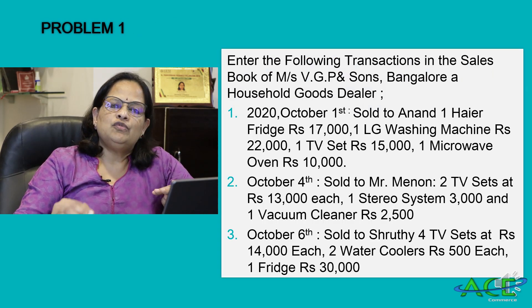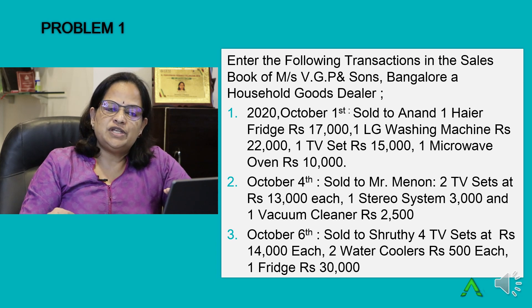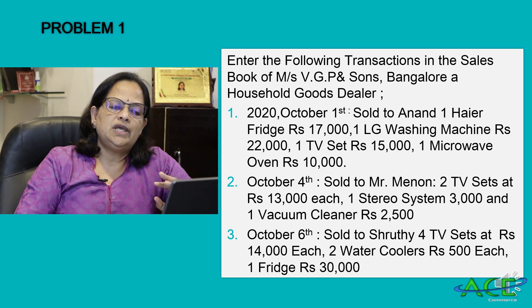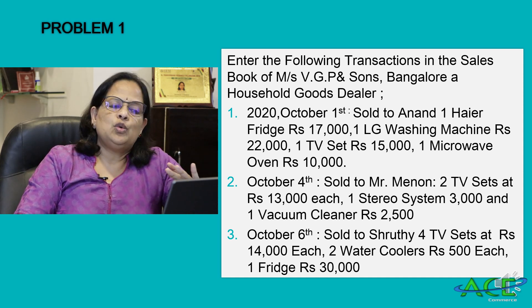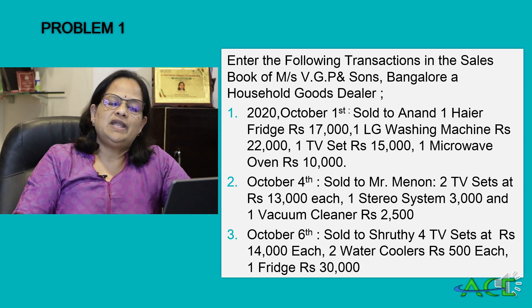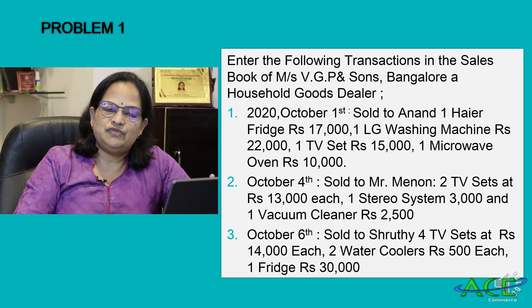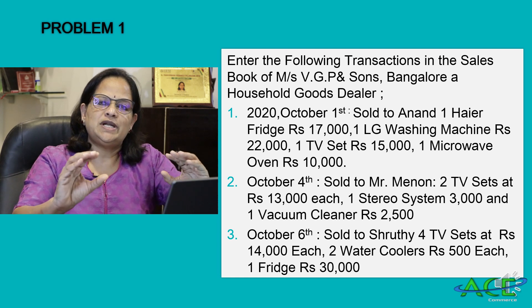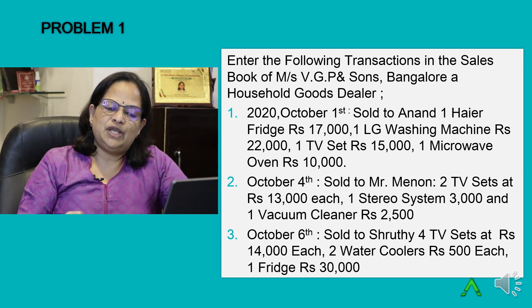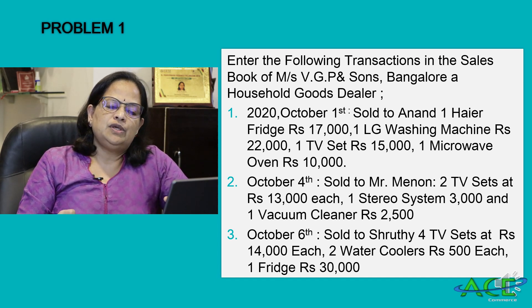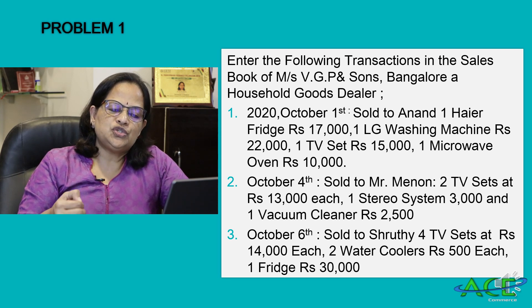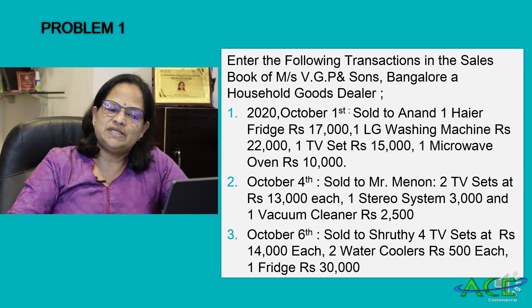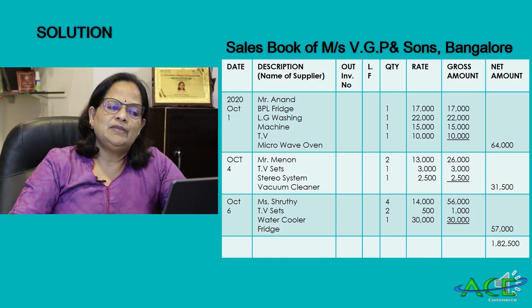Now we will do a problem. Enter the following transactions in the sales book of Messrs VGP and Sons, Bangalore, a household goods dealer. October 1st: sold to Anand one BPL fridge at ₹17,000, one LG washing machine at ₹22,000, one TV set at ₹15,000, one microwave oven at ₹10,000. October 4th: sold to Mr. Manon two TV sets at ₹13,000 each, one stereo system at ₹3,000, one vacuum cleaner at ₹2,500. October 6th: sold to Sruti four TV sets at ₹14,000 each, two water coolers at ₹500 each, one fridge at ₹30,000.